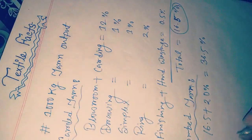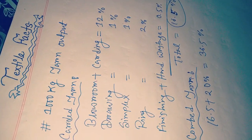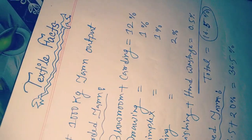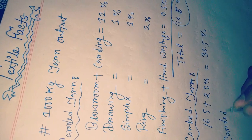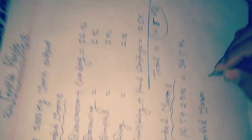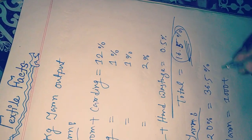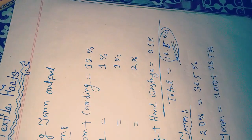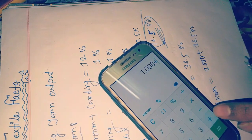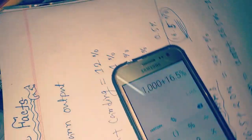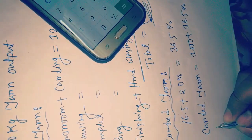Now, if we are calculating for 1000 kg carded yarn, 1000 kg plus 16.5% wastage - let's make the calculation. 1000 plus 16.5% equals 1165 kg. This is the total raw material we need for carded yarn.